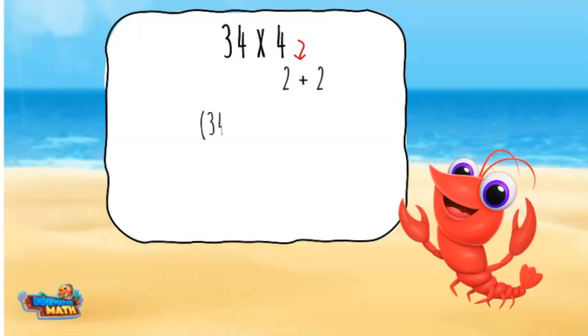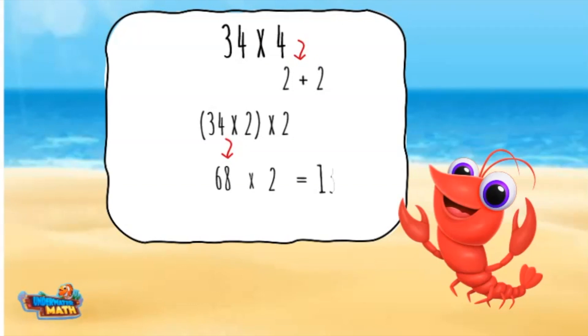The new expression looks like this: 34 times 2 times 2. 34 times 2 equals 68, and 68 times 2 equals 136.